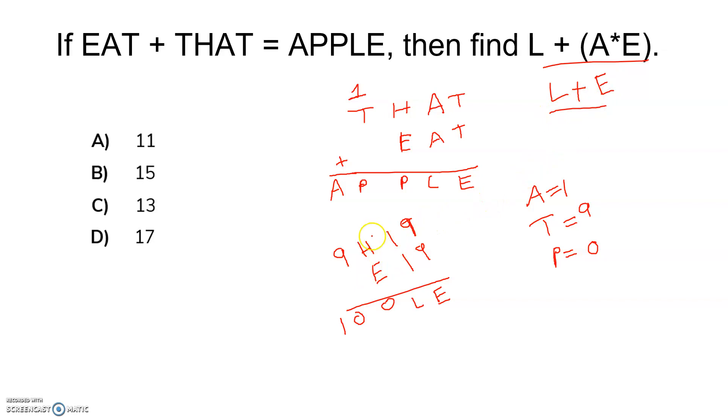So see L plus E. Now you just consider this particular example: 9-H-A-T plus E-A-T equals 1-0-0-L-E. So, nine plus nine is how much? 18. So obviously E equals eight, right? One will be carry. So one plus one plus one, L will be nothing but three, right? So basically three and eight we got. So L plus E is nothing but 11.